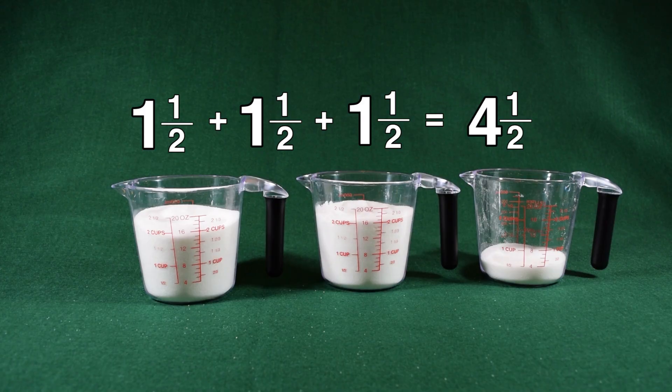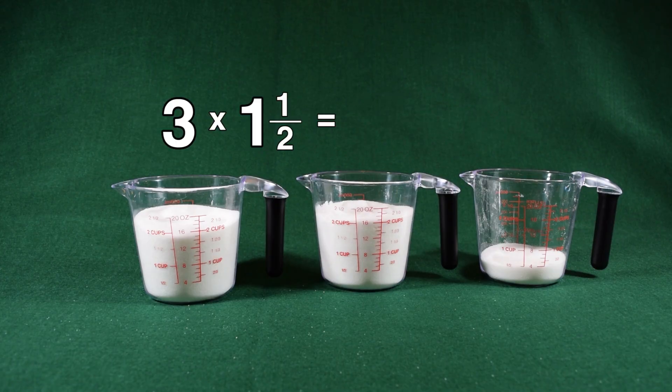Another way we could do it would be to multiply three times one and a half, since multiplication is another way to solve repeated addition.